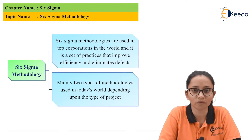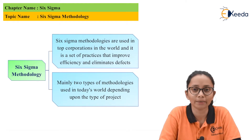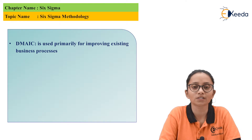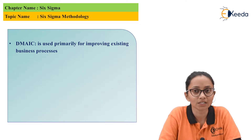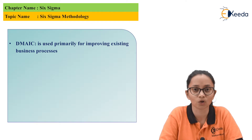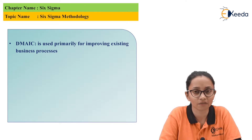Mainly two types of methodologies are used in today's world depending upon the type of project, and these types are DMAIC and DMADV. Let's first start with DMAIC, which is used primarily for improving existing business processes. That means if you are running a business and you want to implement Six Sigma, you should use DMAIC methodology. In DMAIC, every word represents a process which we should follow to implement Six Sigma.